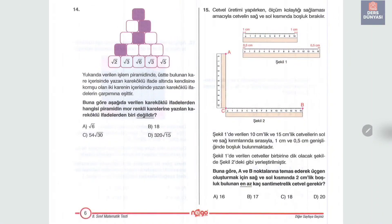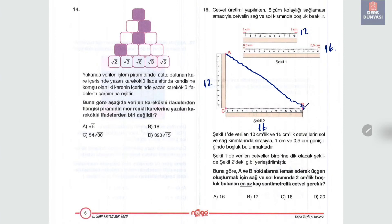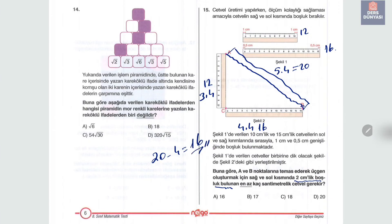On beşinci soruda cetvel üretiminde sağ ve sol kısımda boşluk bırakılmış. 10 cm cetvele 2 cm eklenerek 12 cm, 15 cm cetvele 1 cm eklenerek 16 cm oluşuyor. A ve B noktalarına temas eden üçgen için her iki yanda 2'şer cm boşluk olacak; 20−4=16 cm cetvel yeterli.